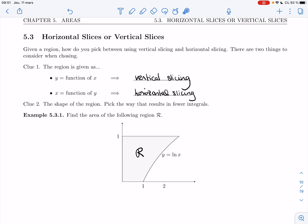And then clue number two is the shape of the region. In cases where you could actually isolate either x or y, the shape of the region might help you pick the one that would involve the least amount of work. So you could pick the way that results in fewer integrals.